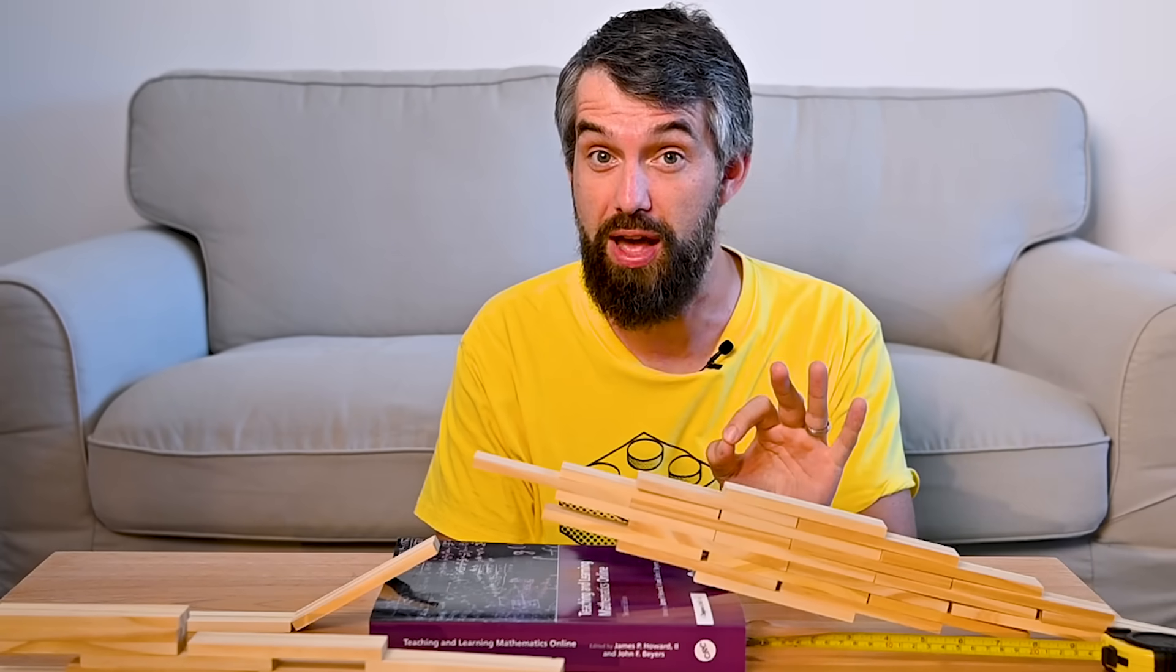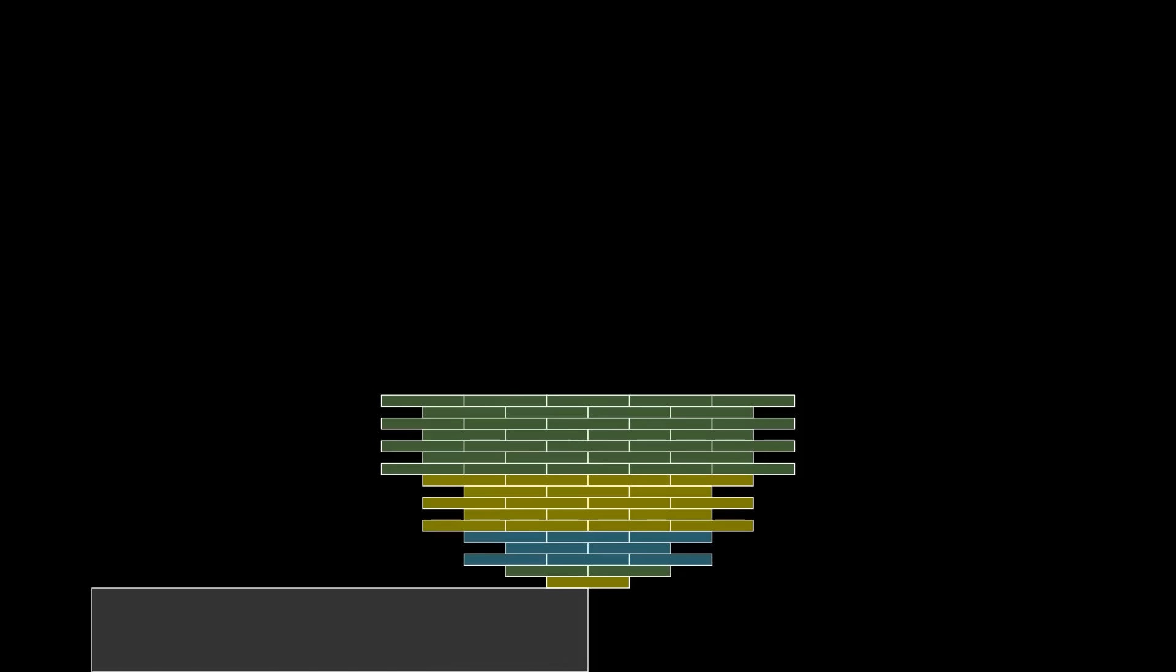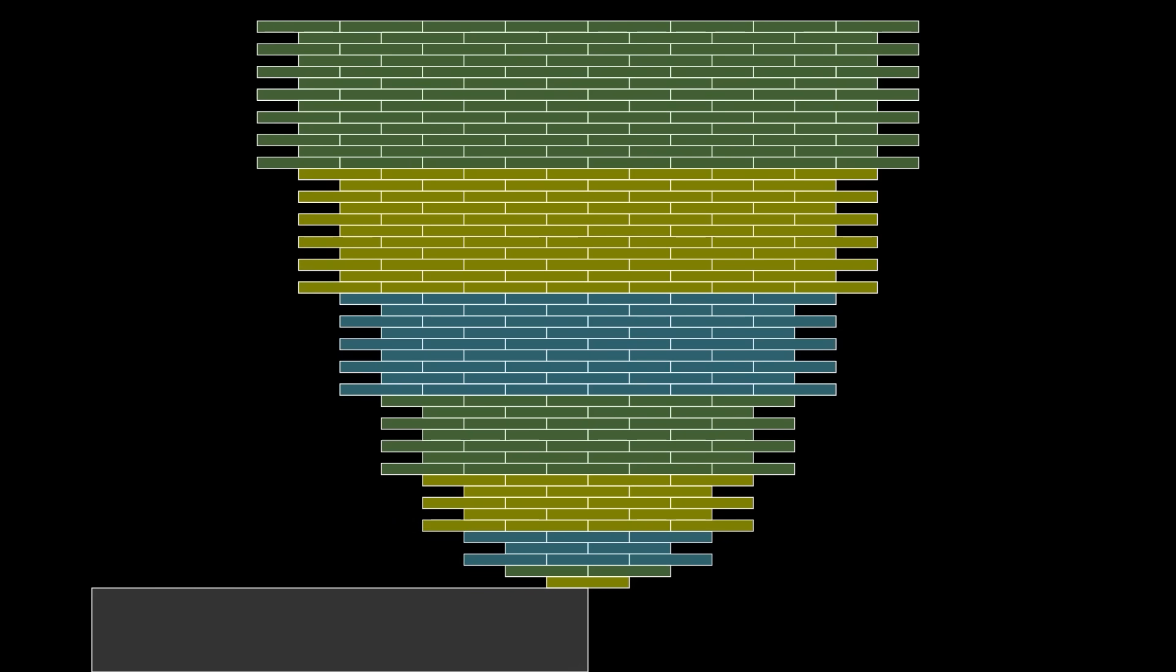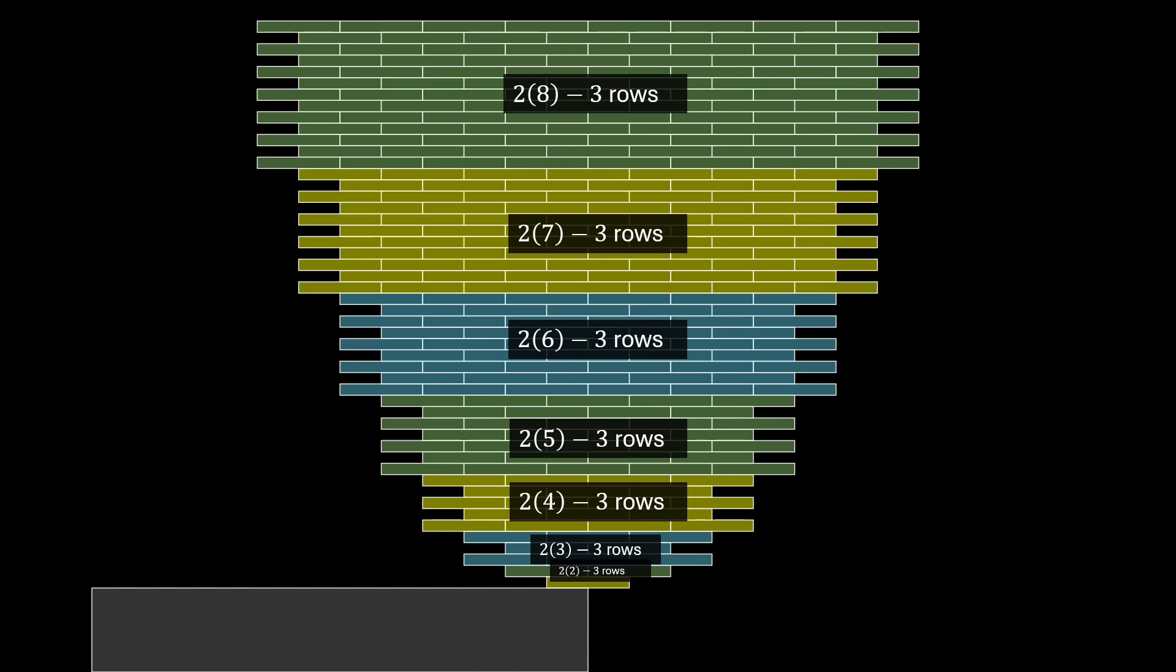But maybe we can modify it. This parabolic stack is built up as a bunch of what I will call cells. There's one cell here that's got two times eight minus three rows, one cell with two times seven minus three rows, two times six minus three rows, and so on.